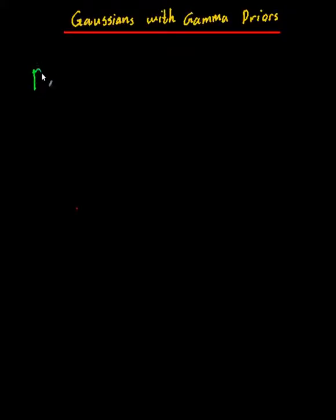In this video, I'm going to be going through putting a gamma prior on a normal distribution. When I say putting a prior on a normal distribution, this is what I really mean. Let's say I have a random variable called y, and given this other random variable - and I do mean given - y given z is going to be normally distributed.